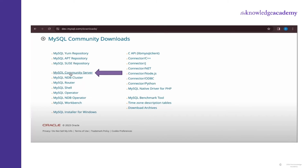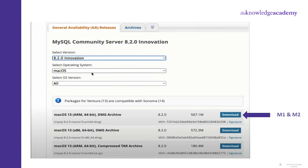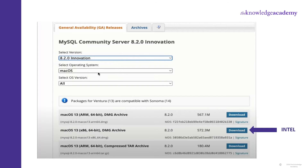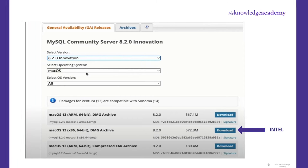You will be redirected to a new page. Click on the MySQL Community Server section. On the next page, select the download option according to the chip present in your system. For M1 and M2 chip, go with macOS ARM 64-bit DMG Archive having a file size of 567.1 MB. Click on Download as shown on your screen. But if you have an Intel chip in your macOS system, proceed with the x86 64-bit DMG Archive with a file size of 572.3 MB, and click on Download as visible on your screen.